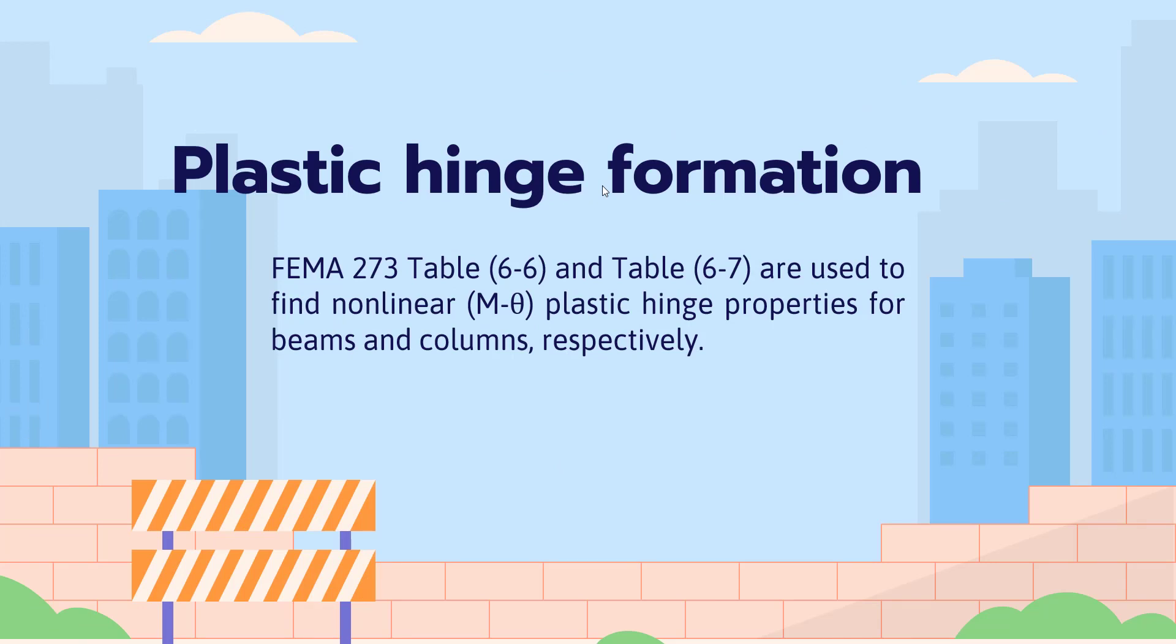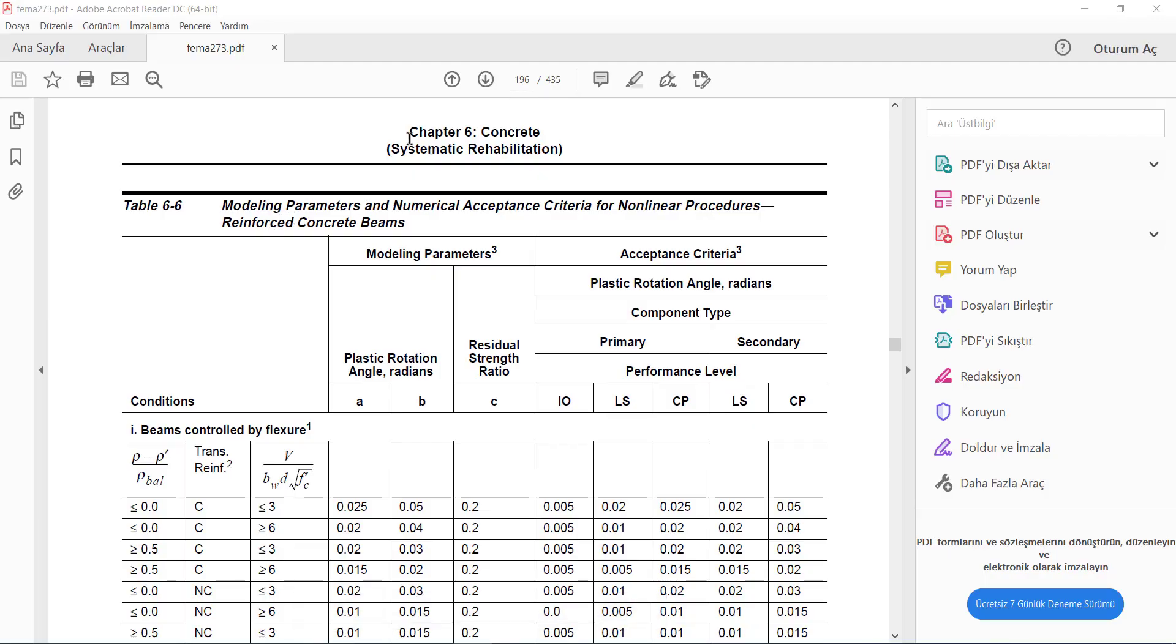The second criteria is plastic hinge formation. FEMA 273, table 6-6 and table 6-7, are used to find non-linear m-theta plastic hinge properties for beams and columns. As you can see here, chapter 6, concrete, table 6-6, modeling parameters and numerical acceptance criteria for non-linear procedures, reinforced concrete beams.